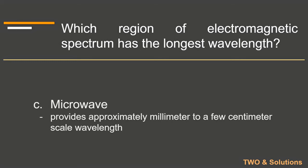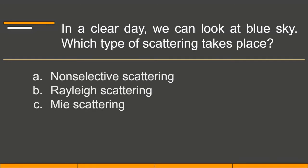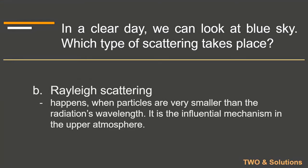On a clear day we can look at the blue sky. Which type of scattering takes place? Rayleigh scattering. Rayleigh scattering occurs when particles are very small, smaller than the radiation's wavelengths. It is an influential mechanism in the upper atmosphere.